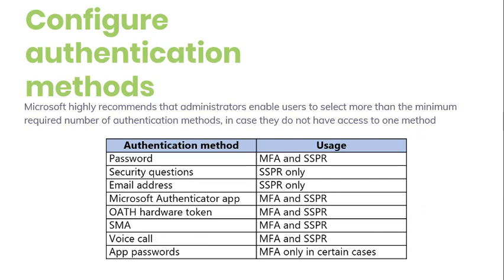Now we come to configuring authentication methods. This module previously discussed Azure MFA and self-service password reset (SSPR) in Azure AD. These services may require additional information to confirm your identity — this additional information is called an authentication method. We recommend that administrators enable users to select more than the minimum number of required authentication methods in case they don't have access to a certain one.